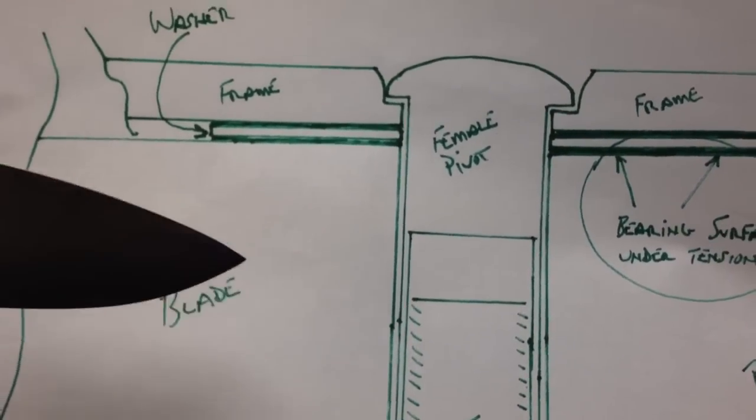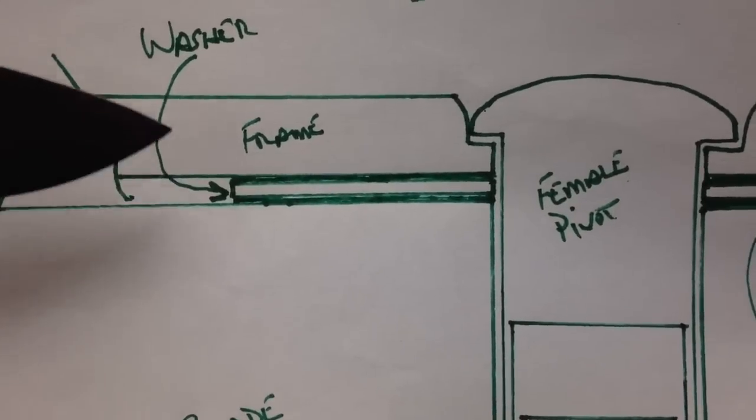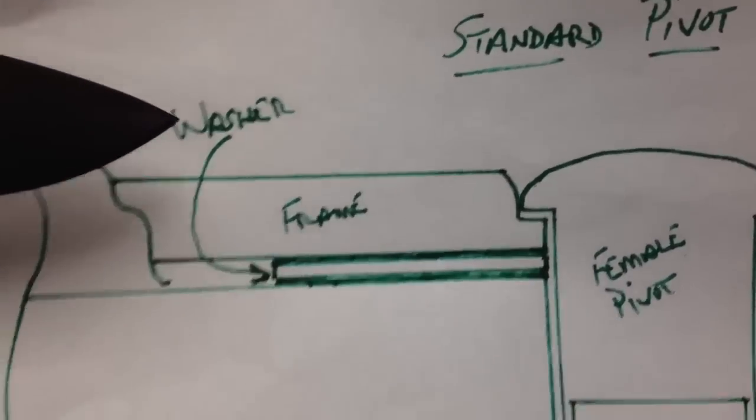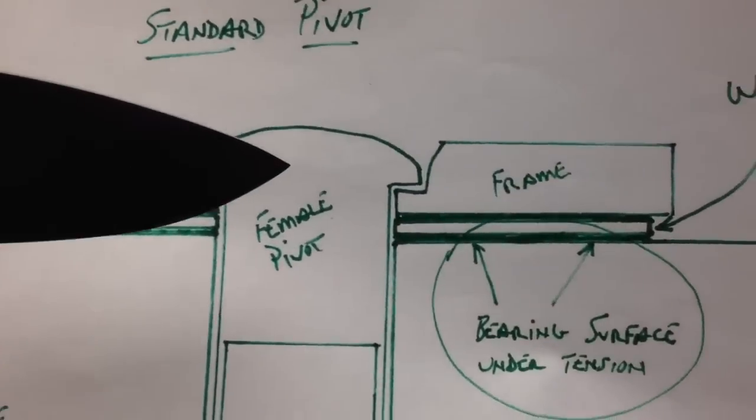And then the blade will generally not ride on the frame itself or the liner. There's usually going to be a washer. Many of them now are phosphor bronze. Some of them are teflon.